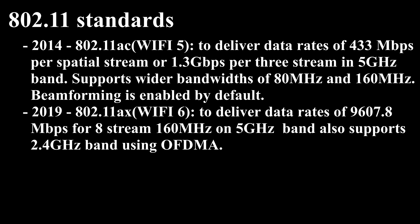802.11ac Wave 2 is an update to the original 802.11ac spec that uses MU-MIMO technology and other advancements to help increase theoretical maximum wireless speeds to 6.93 Gbps. 802.11ax, also referred to as Wi-Fi 6, year 2019, improves on Wi-Fi 5 with more speed, bandwidth, and security.